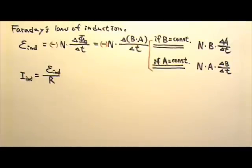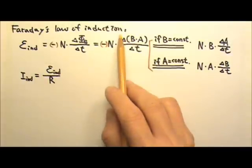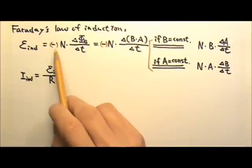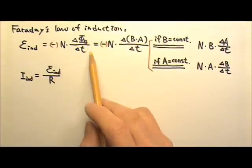If we need to find the induced EMF, we can use Faraday's law of induction. Faraday's law of induction says that the induced EMF equals negative n times delta phi b over delta t.